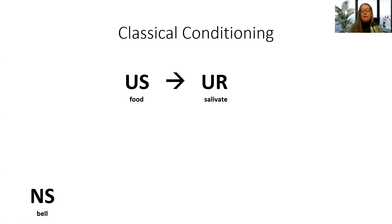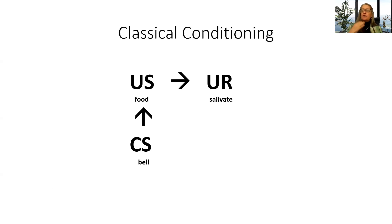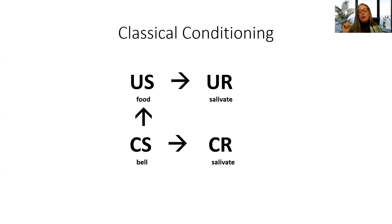What Pavlov did is he rang a bell, then gave the dog food — the dog salivated. Bell, food, salivate. After a number of these connections, when he rang the bell, the dog would salivate — no longer needed the food. The dog hears the bell, the dog salivates. When the dog is salivating to the bell, we call it the conditioned response. When the dog is salivating to the food, we call it the unconditioned response. And the bell is the conditioned stimulus; the food is the unconditioned stimulus.